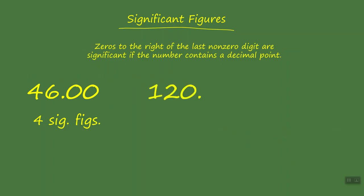Let's take a look at our second example. We have the number 120. with a decimal point at the end. That makes this zero significant — it is the zero following the last non-zero digit. So in this particular example, our value has three significant figures. All three digits, including the zero, are significant.